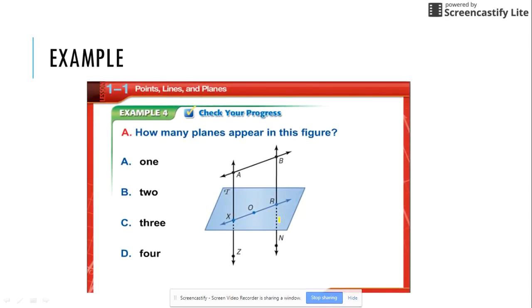How many planes appear in this figure? One plane would be this top plane, A, B, R, because planes are named by three letters. So even though we have O and X, we do not need those. Here is one plane, and then we have plane T that it intersects, therefore there are two planes.